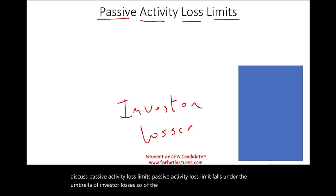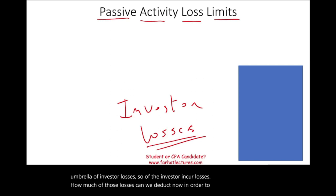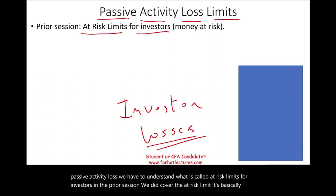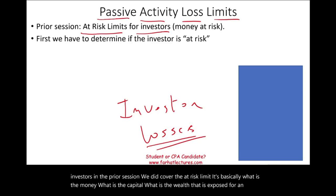In order to understand the passive activity loss, we have to understand what is called at-risk limits for investors. In the prior session, we did cover the at-risk limit. It's basically what is the money, what is the capital, what is the wealth that is exposed for an investor? And that's the amount that the investor can deduct.